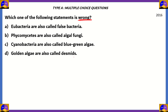Option D: diatoms, which are a particular kind of protozoan, are also called golden algae. This statement is true, so option D is incorrect as our answer. Option C: cyanobacteria are also called blue-green algae — this is quite well known, so the statement is true, which means option C is also incorrect as our answer.